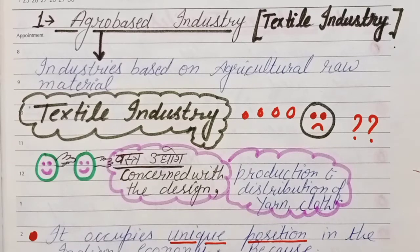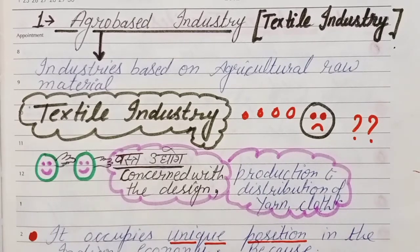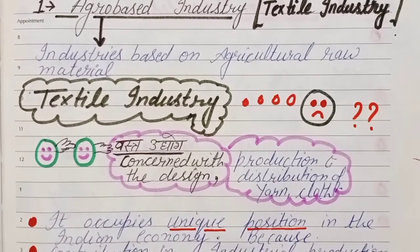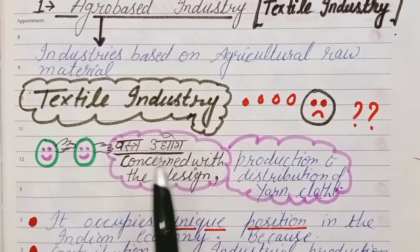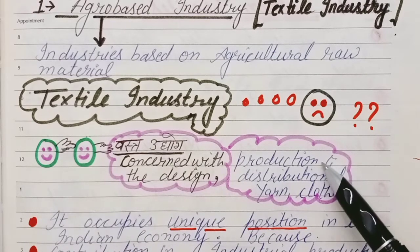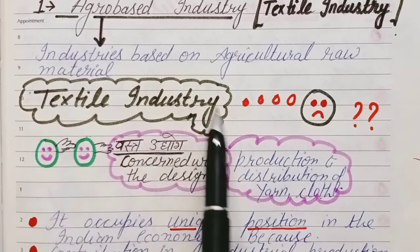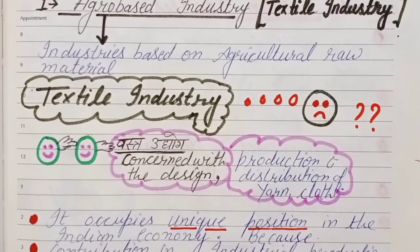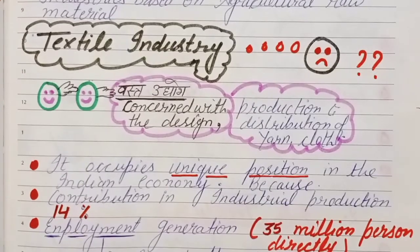Now the question is — what exactly is textile industry? What do we call textile? Textile means vastra udyog, i.e., cloth industry. It is concerned with the design, production, and distribution of yarn and cloth. All of this together is what we call the textile industry.